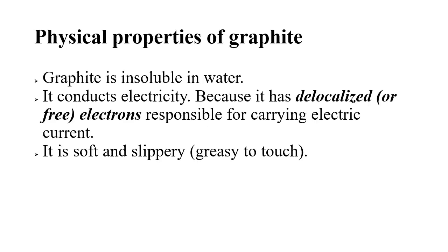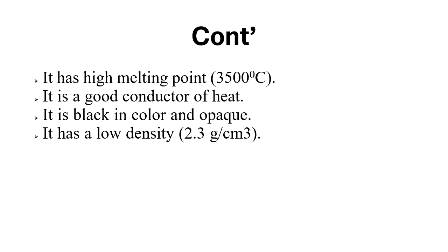Let's continue by talking about the physical properties of graphite. Graphite, like diamond, is insoluble in water. It conducts electricity because it has delocalized, or free, electrons responsible for carrying electric current. It is soft and slippery, which means greasy to touch. Graphite has a high melting point of about 3500 degrees Celsius. It is a good conductor of heat. Graphite is black in color and opaque. It has a low density of 2.3 grams per centimeter cubed, compared with diamond.